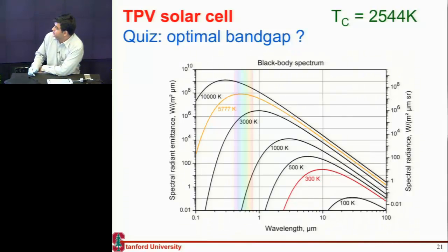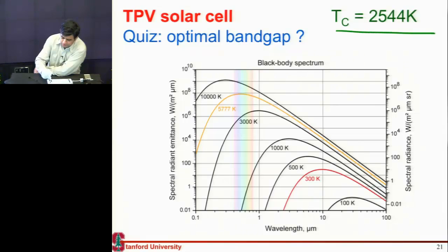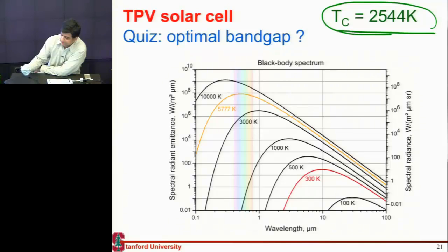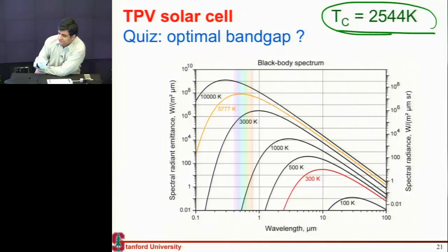One thing I want you to think about is that if I want to make this solar cell which is optimized for thermophotovoltaic conversion, what should be the band gap of that cell? Should I use a silicon cell? Should I use a gallium arsenide cell? What kind of cell should I use to achieve this thermophotovoltaic conversion?